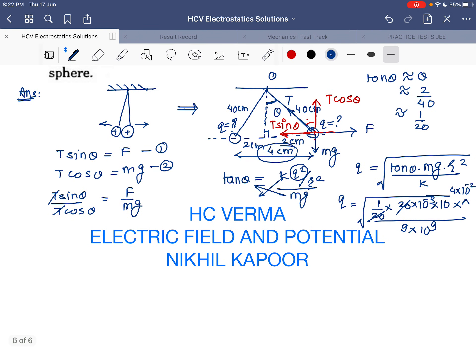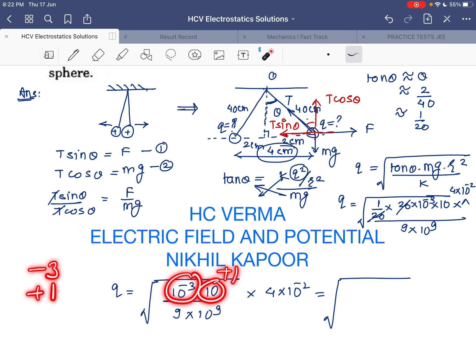I can write q equals the square root of 10 to the minus 3 times 10 divided by 9 times 10 to the power 9, multiplied by 4 centimeters. Let's solve the powers of 10. This is 10 to the minus 3, this is 10 to the plus 1, this becomes minus 1, so that's minus 3 plus 1 minus 2, which becomes minus 11. This comes out to be 10 to the minus 11 over 9 times 4 times 10 to the minus 2.